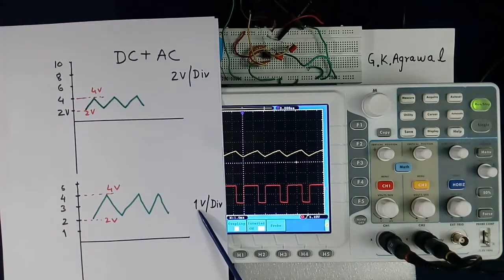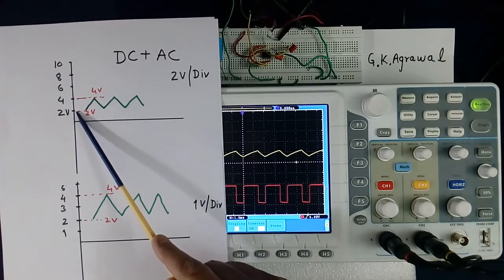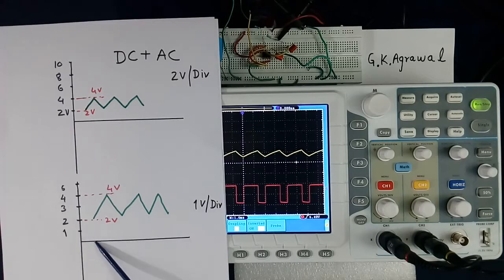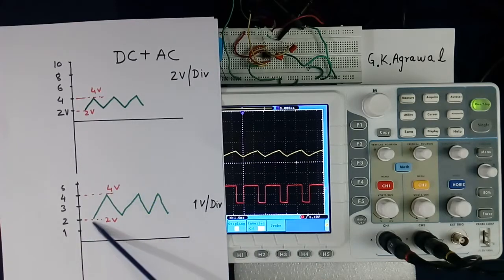Now if we make 1 volt per division, everything will go up. DC also will be like this, and AC also will be like this. This point will go little higher, this point will go little higher.